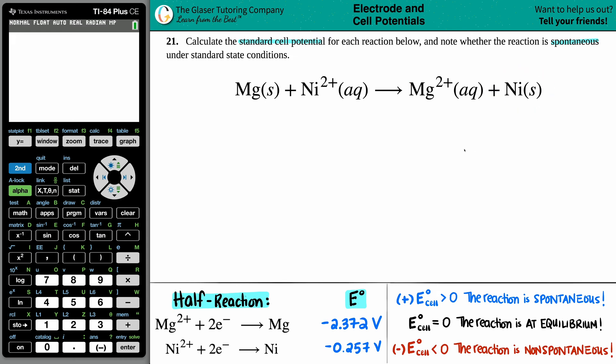We want to know what the standard cell potential is. Now a cell potential is known as E cell. This little notch here means that we are under standard state conditions. So we're trying to solve for an E cell.